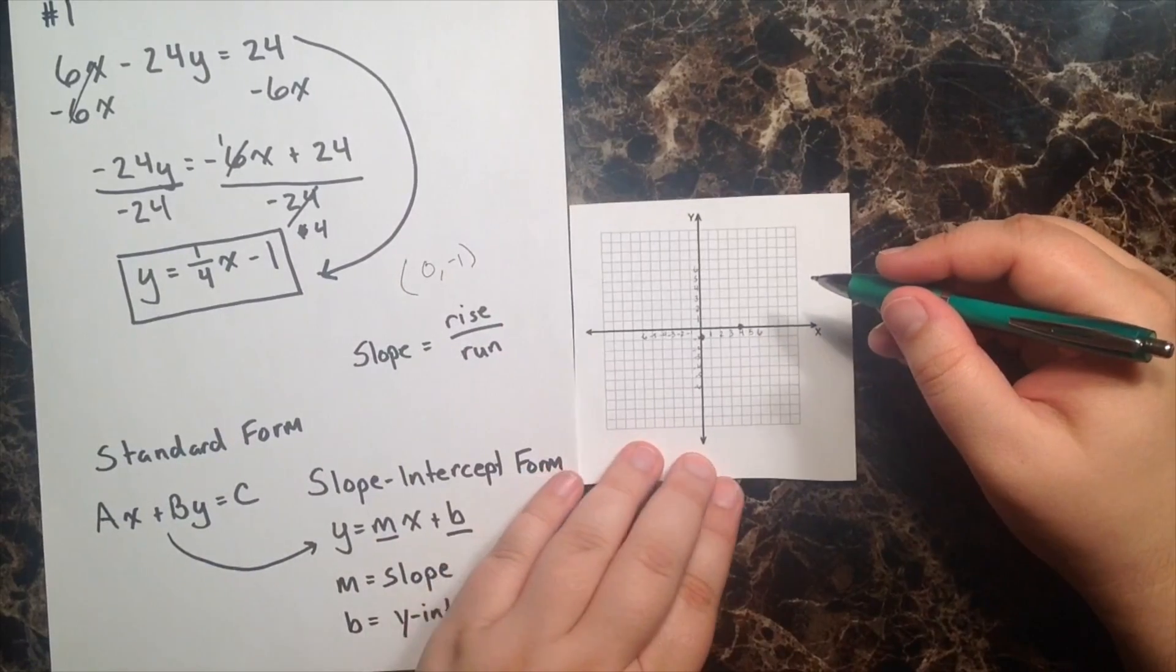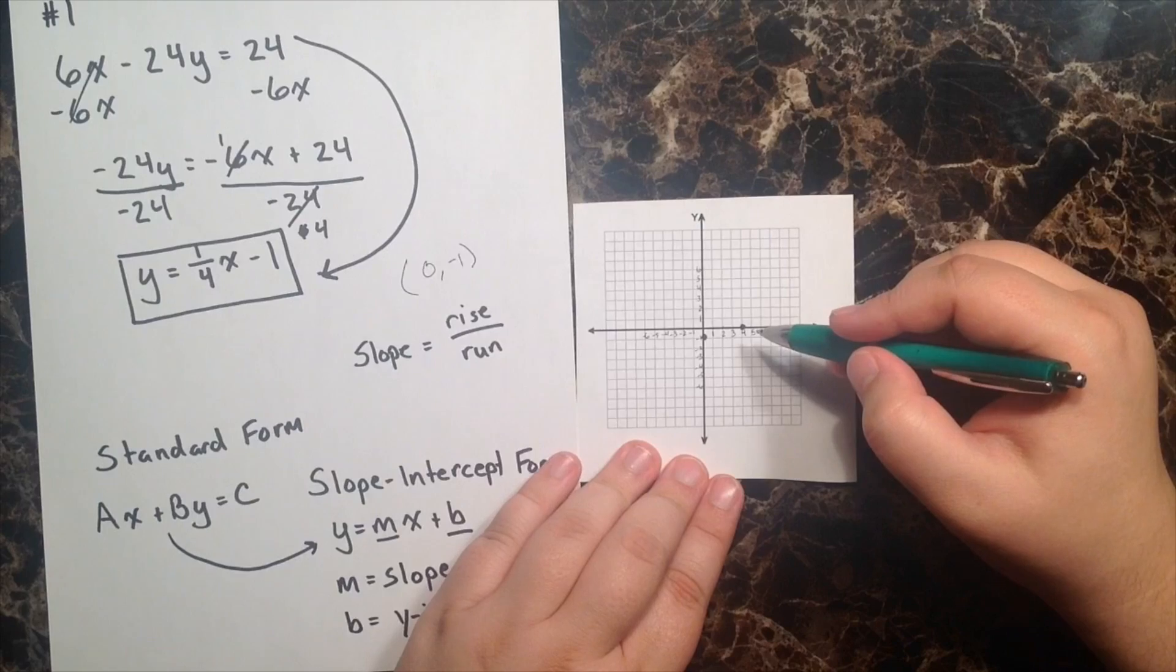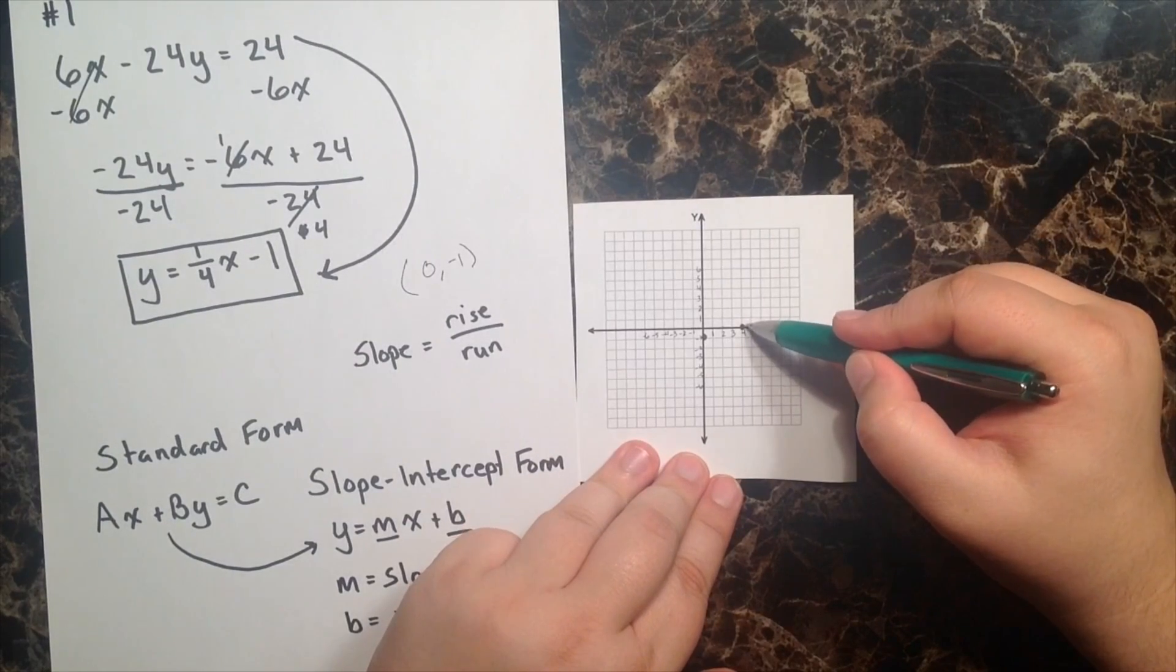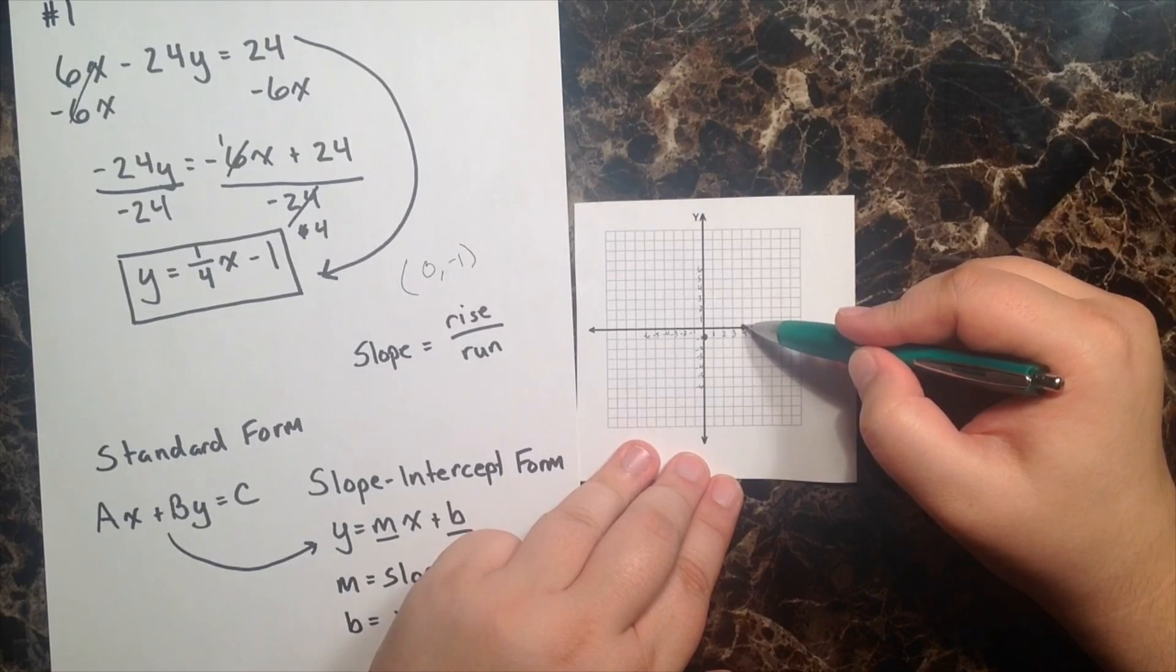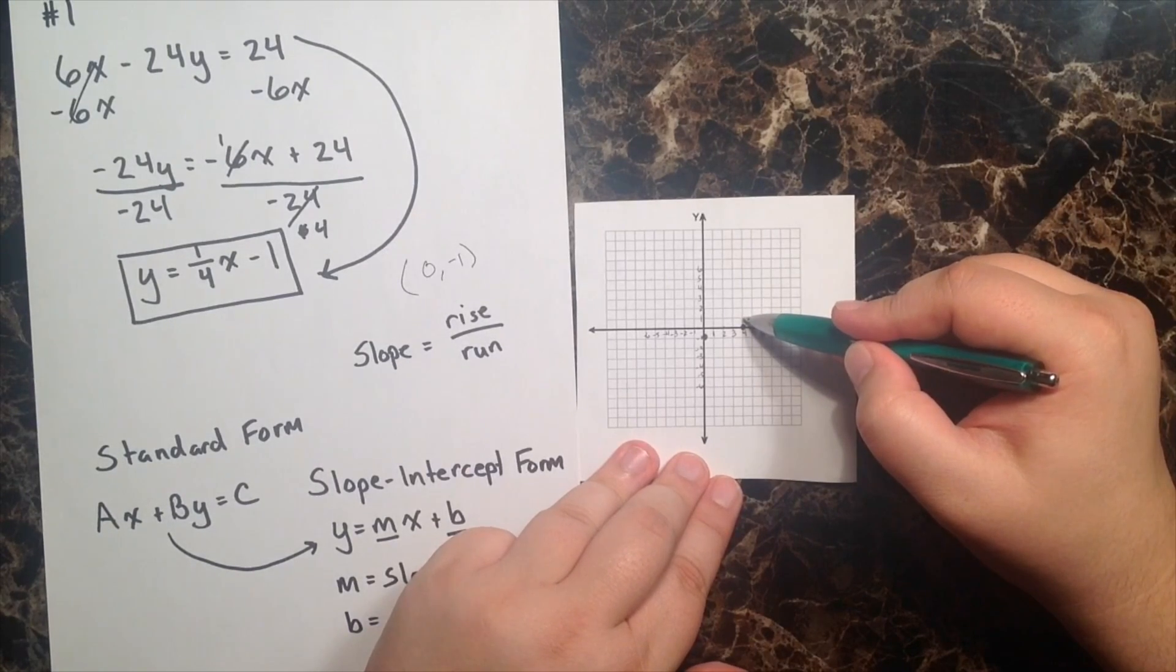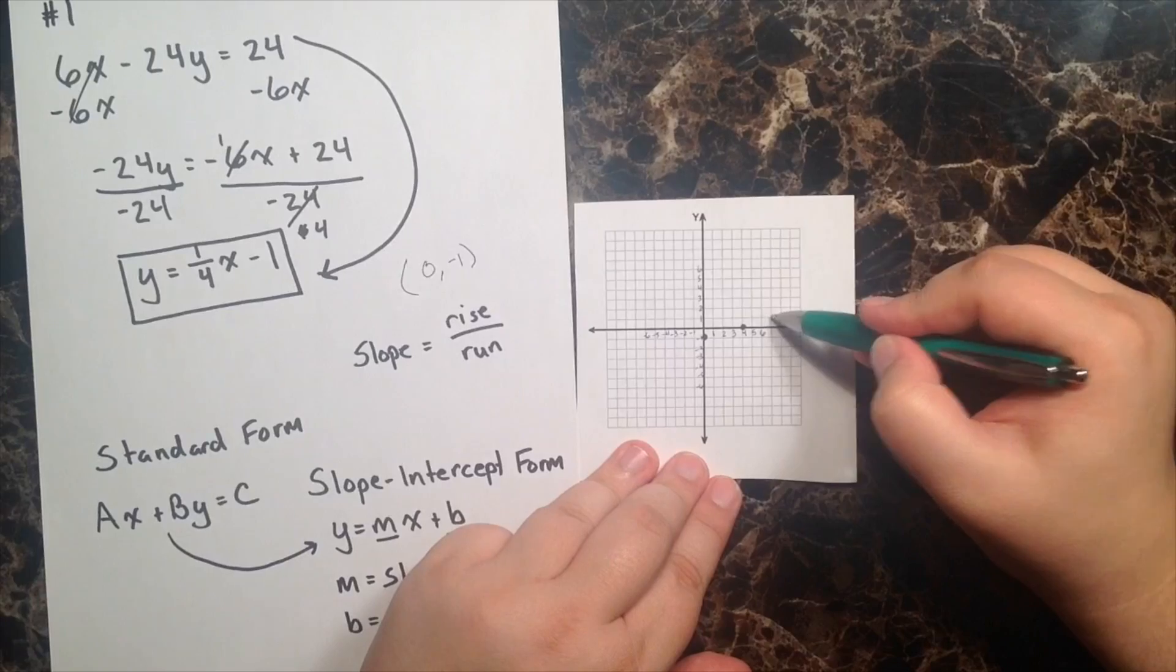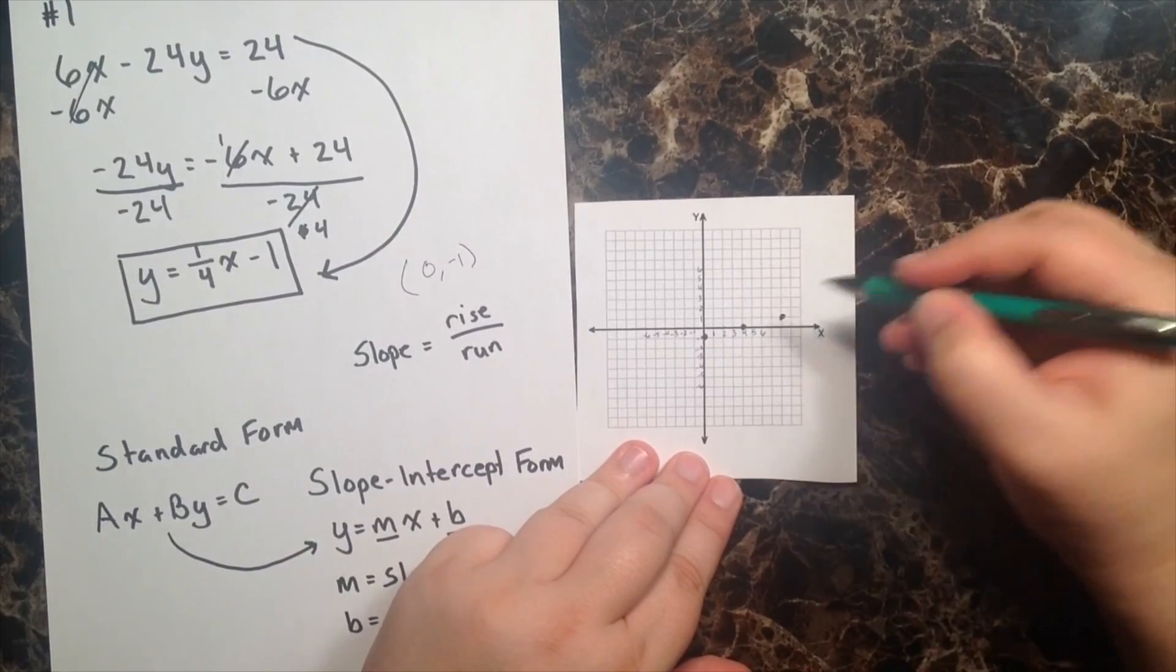Now we have more than enough here to graph our line, but let's go ahead and just plot one more point so that we can more easily distinguish this line. And all I'm going to do is start at my new point, my newest point here on the x-axis, and use the same slope and plot my next point. So I'm going to go up 1 again, which is my rise, and then I'm going to run positive 4 units. So 1, 2, 3, and 4.